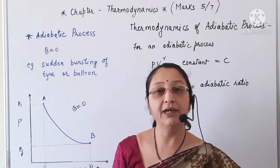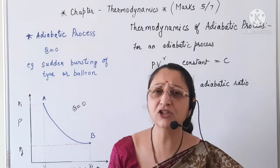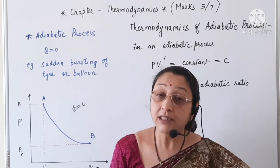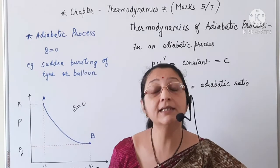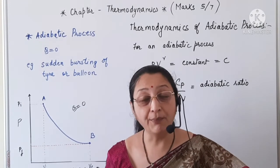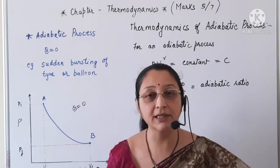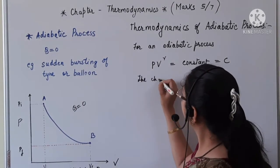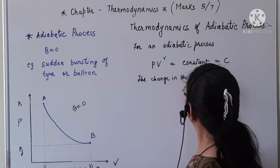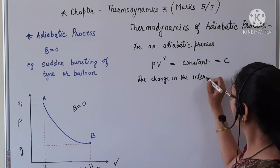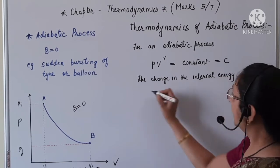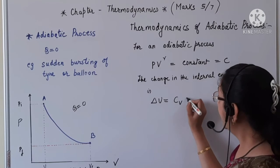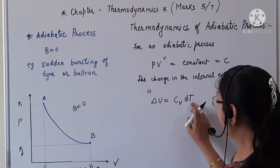The adiabatic system is thermally isolated from the surroundings and hence cannot exchange heat. Therefore the internal energy of the system changes, and since the internal energy changes, the temperature of the system also changes in the adiabatic process. The change in internal energy is given by ΔU = CV · dT, where N = 1 mole.